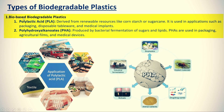There are two types of biodegradable plastics. The first is bio-based biodegradable plastics. Poly lactic acid (PLA) is derived from renewable sources like corn starch or sugarcane and is used in packaging, disposable tableware, and medical implants. Polyhydroxyalkanoates (PHA) are produced by bacterial fermentation of sugars and lipids and are used in packaging, agricultural films, disposable items, and medical devices.